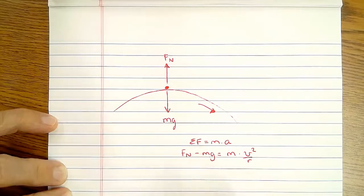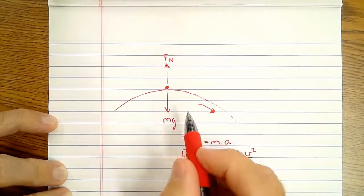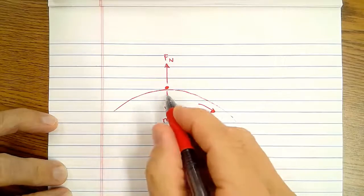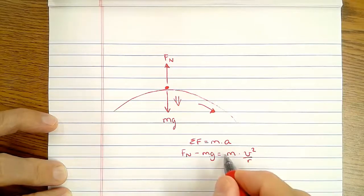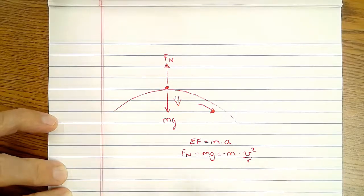When you're moving in a circle, the acceleration always points to the middle of the circle. The middle of the circle is in this direction, so the acceleration's got to point downwards, so this is going to be negative.